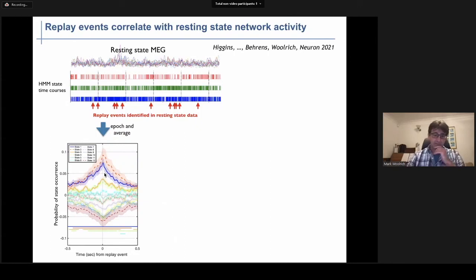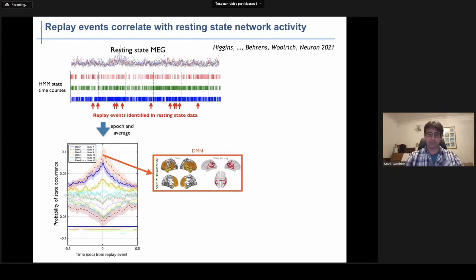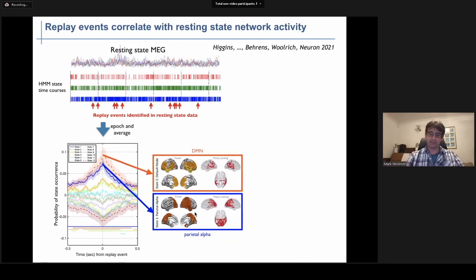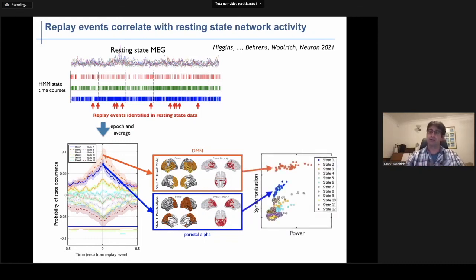When we do this, we can see that there are two particular network states that show an increase in occurrence in the 100 milliseconds or so around replay. These correspond to the default mode network and to the parietal alpha network as we refer to it. This essentially incorporates parietal regions and the PCC with strong power in the alpha band. What's also interesting about these networks is that they also are the ones that exhibit the most network-wide synchronization, brain-wide synchronization, particularly the default mode network.